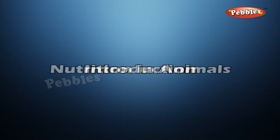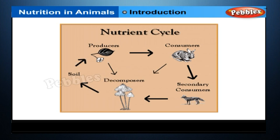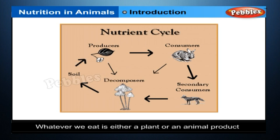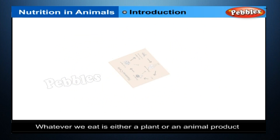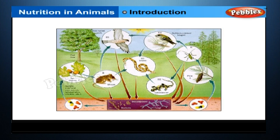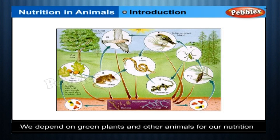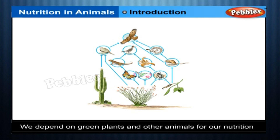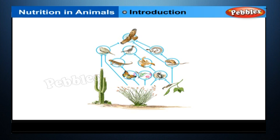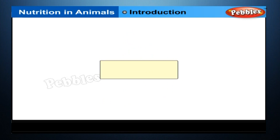Nutrition in Animals. We see that whatever we or animals eat is either a plant or an animal product. Since we cannot photosynthesize because we lack the green pigment chlorophyll, we have to depend on green plants and other animals for our nutrition. So our mode of nutrition and that of other animals and of some plants is heterotrophic.